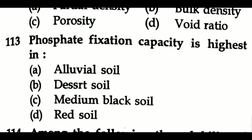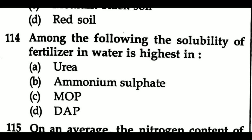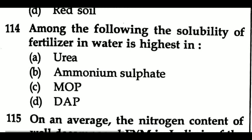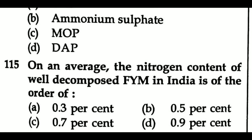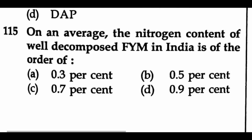Question 113: Phosphate fixation capacity is highest in — Option A: alluvial soil, Option B: desert soil, Option C: medium black soil, Option D: red soil. Question 114: Among the following, the solubility of fertilizer in water is highest in — Option A: urea, Option B: ammonium sulfate, Option C: MOP, Option D: DAP. Question 115: On an average, the nitrogen content of well decomposed FYM in India is of the order of — Option A: 0.3%, Option B: 0.5%, Option C: 0.7%, Option D: 0.9%.